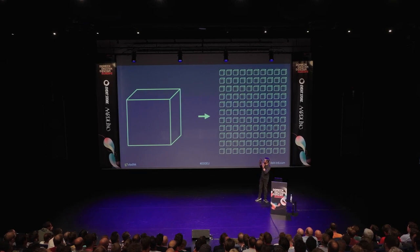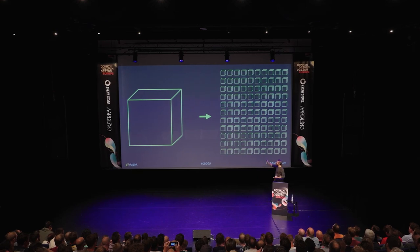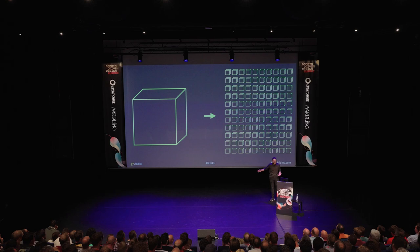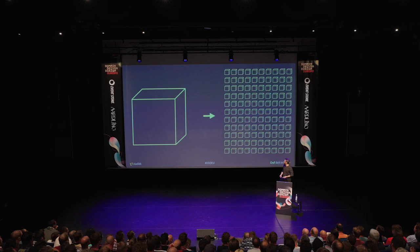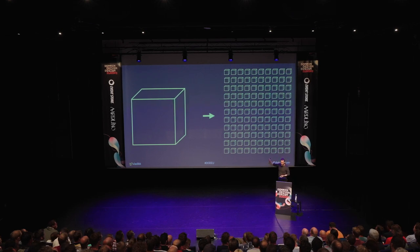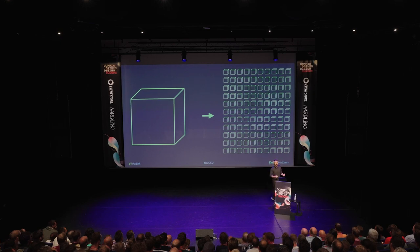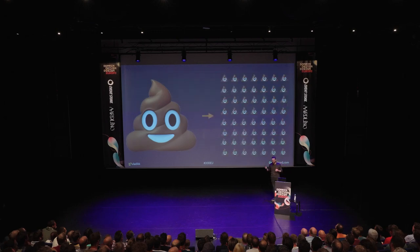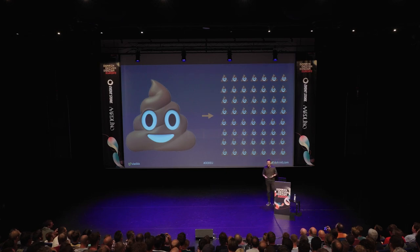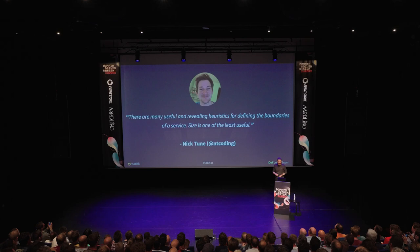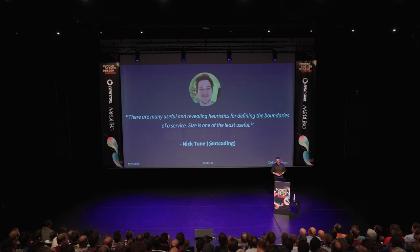We want to break all bigger systems apart into those tiny, tiny boxes — whether they're objects, classes, services, microservices, or serverless functions. The motivation is always the same: we want to be able to change every one of those little boxes independently. When we focus on size, we usually go from coupled piles of code to distributed piles of code. As Matthias says, going for as small as possible is almost universally bad advice in software design. Nick Tune adds: size is one of the least useful heuristics for defining service boundaries. And yet we keep doing that.